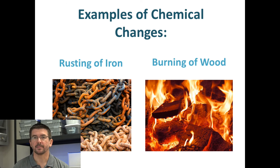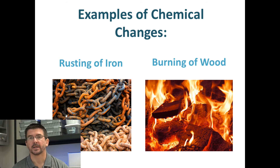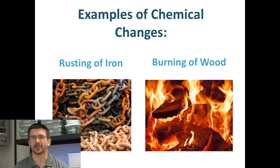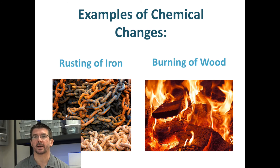Some examples of chemical reactions or chemical changes are things like rusting of iron, which is an example of oxidation — we'll do some activities to look at that over the next few days. Burning wood, burning coal, burning paper — anything that's burning is a type of chemical change, a type of chemical reaction.